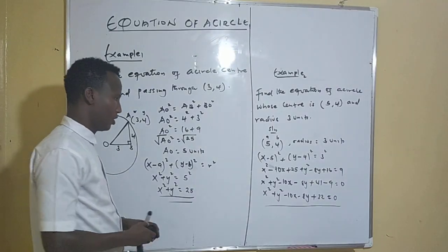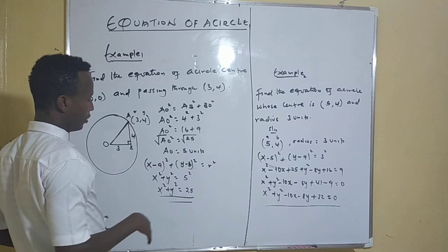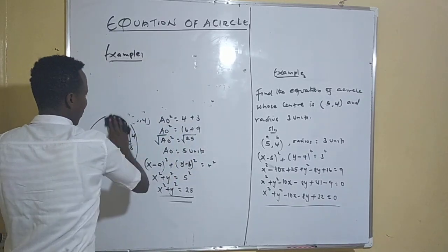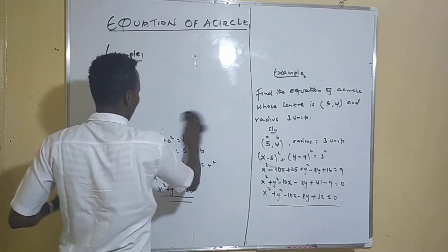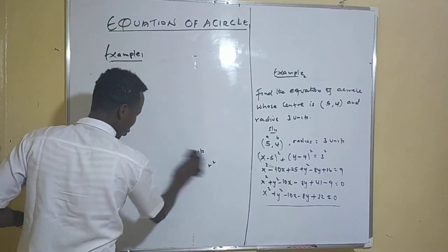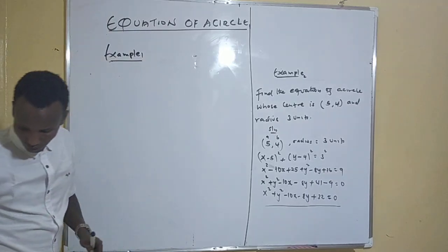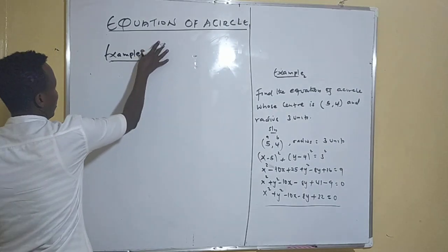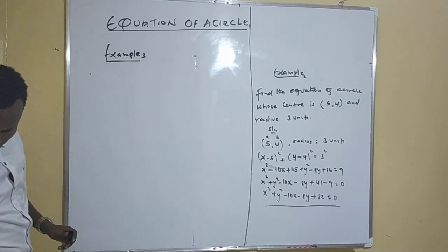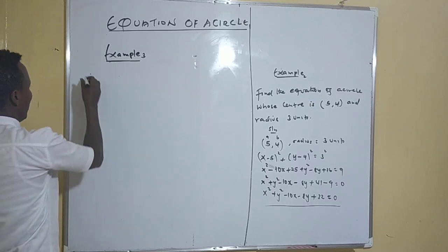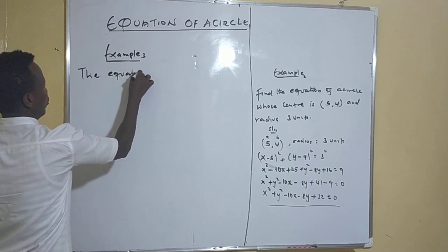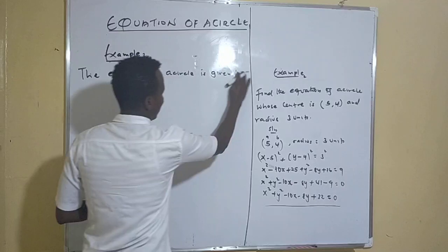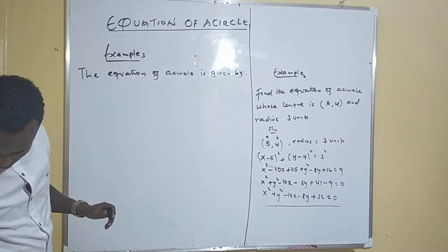After finding the equation given the center and radius, we will now see how to get the center and the radius given the equation. This is Example Three, where we discuss how to get the center and radius given the equation of a circle. The equation of a circle is given by x squared minus six x plus y squared plus four y minus three equals zero.